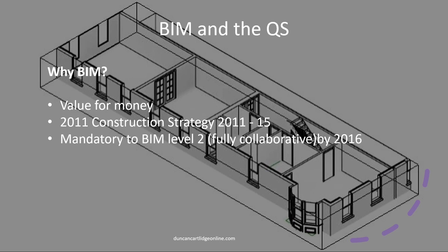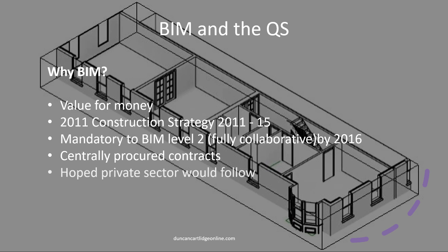Therefore, the government's 2011 construction strategy included the requirement that BIM at Level 2 — the levels of BIM will be explained later — should be mandatory for all centrally procured projects. It was hoped that the private sector would follow. The EU public procurement juggernaut followed in 2018.